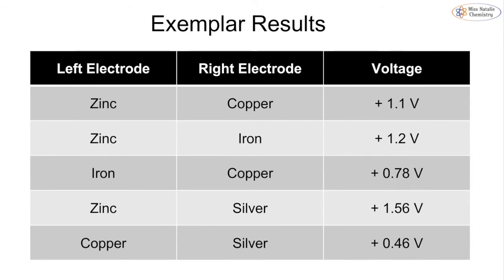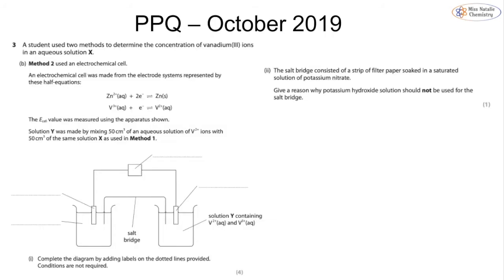An example of voltages that we may see: for zinc and copper, we should be getting 1.1 V. For zinc and iron, 1.2 V. Iron and copper, 0.78 V. Zinc and silver, 1.56 V. And copper and silver, 0.46 V. Your results may not be exactly the same as these, but they should be roughly in the same area. If they're not, you might want to double check that you have the correct concentrations and make sure that you have completely sanded down your metals and that you don't have any loose connections.